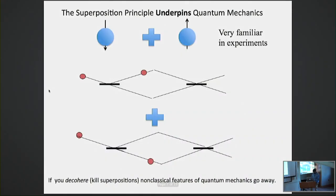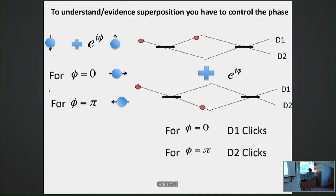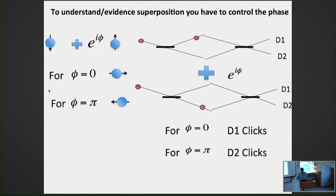I start by motivating a bit. The superposition principle underpins quantum mechanics — I think no one will deny that. If you decohere superpositions, you kill all interesting quantum aspects. How do we verify superpositions? The most important thing is that you should be able to give a controlled relative phase between components of a superposition. That is the real proof of a superposition — you should be able to control a phase and see the variation of the output due to this relative phase between components.